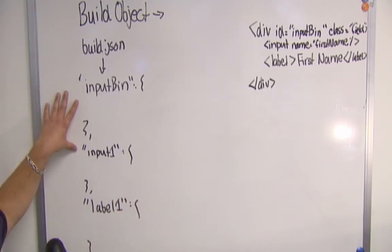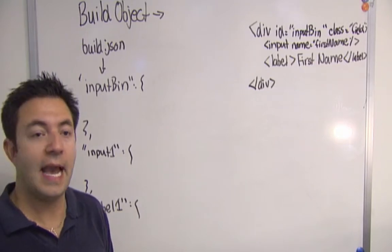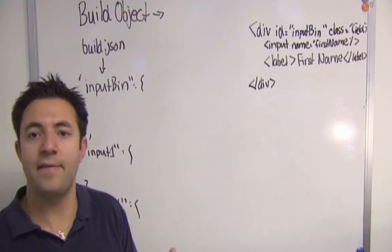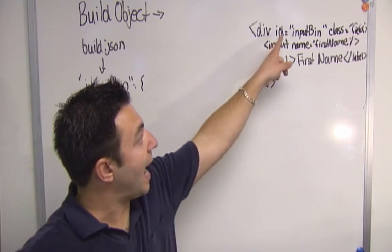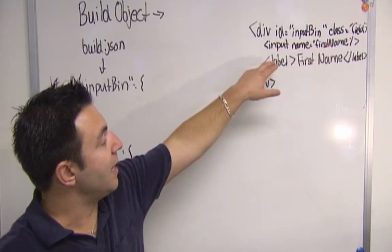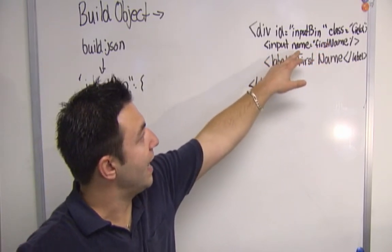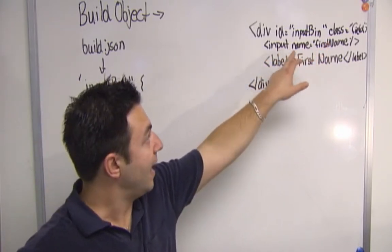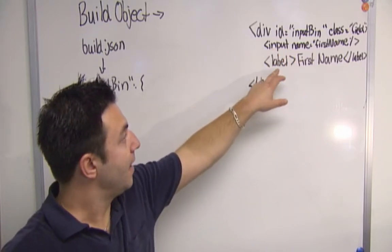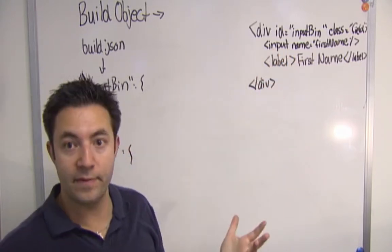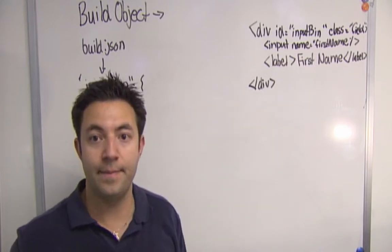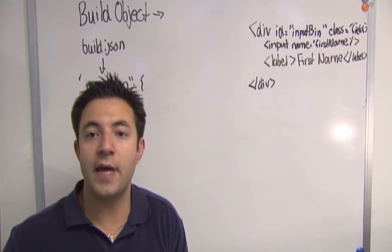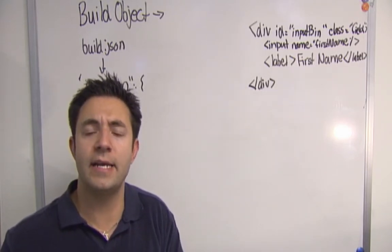So these three build objects would typically have filler inside of them. They would have attributes of ID and class. Input would have an attribute of name and a type of input. And label would have a type of label and content first name. We're going to go and review that in a second. But what I want to focus on right now is children.